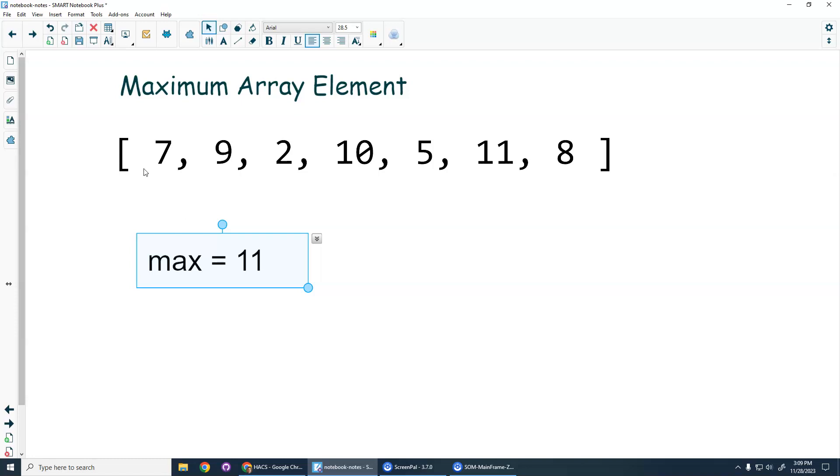Ta-da, right? So starting off with a value that you can compare things to, start off with the seven as your max, loop through the rest of the values. And whenever you find an element larger than what your current maximum is, you just update this variable. And then this variable should store your maximum once you're done.